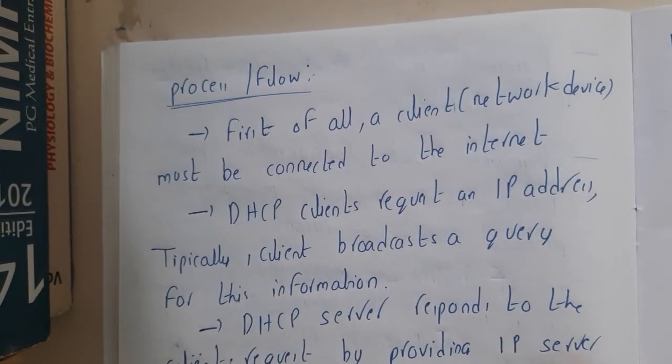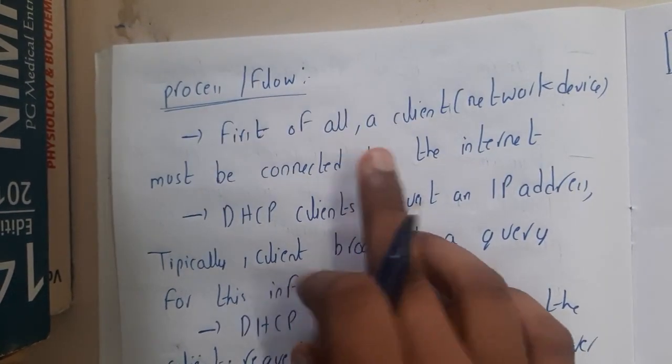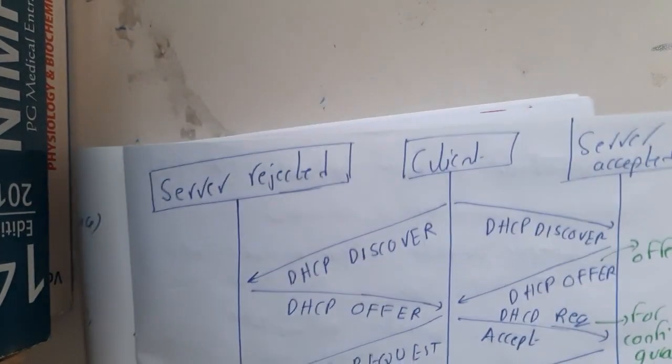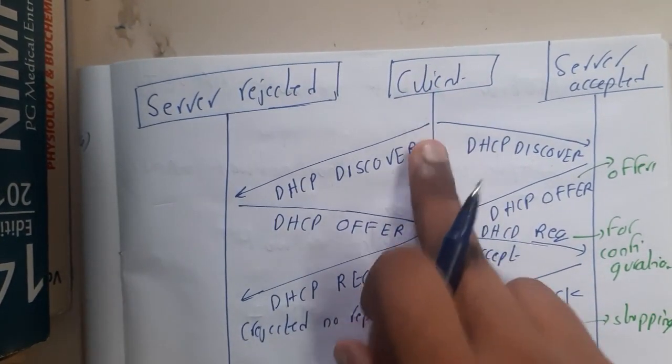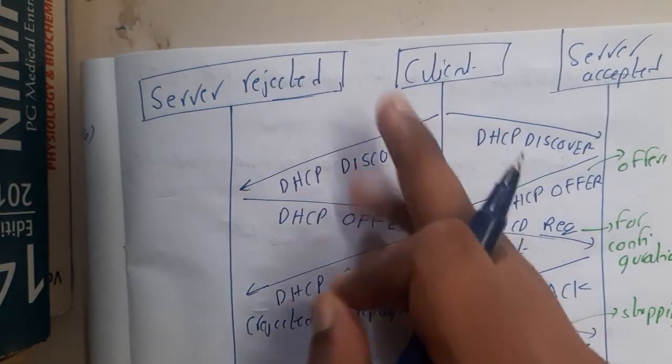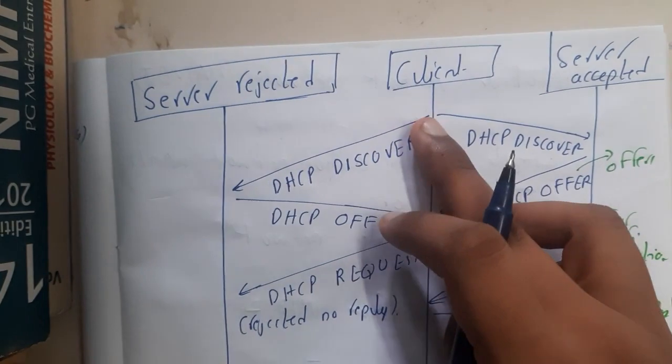The flow will be in this way. First of all, let us go through the diagram, then I'll be explaining. Assume that you are a client. You will be sending a request. This is the first phase, this is the second phase.